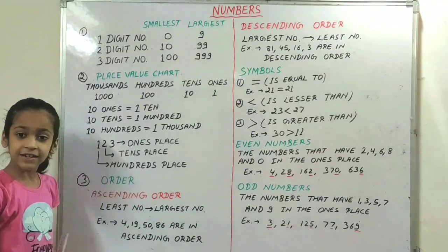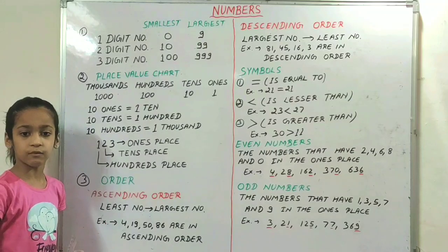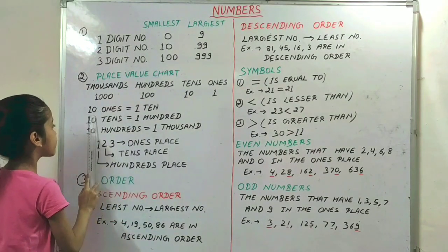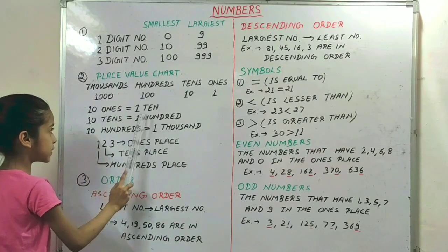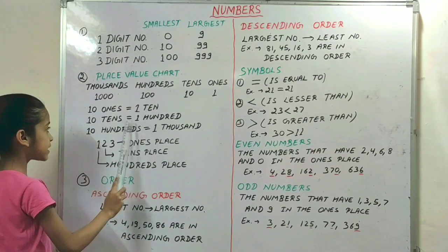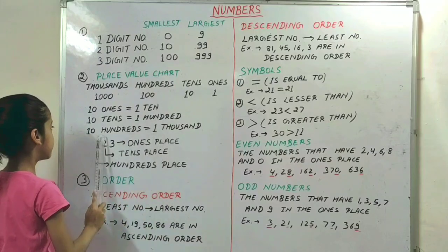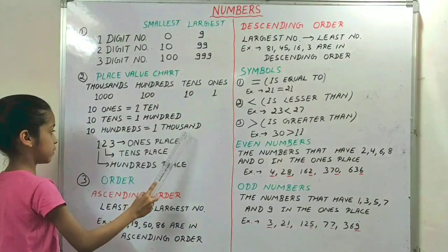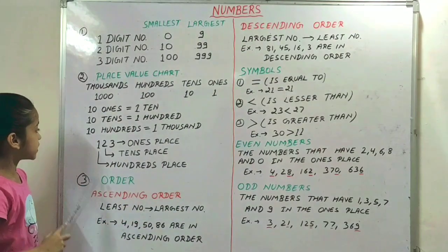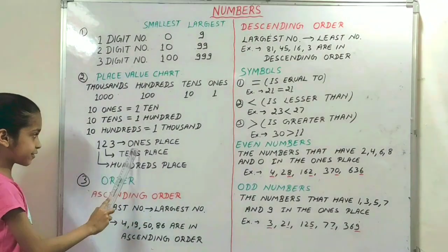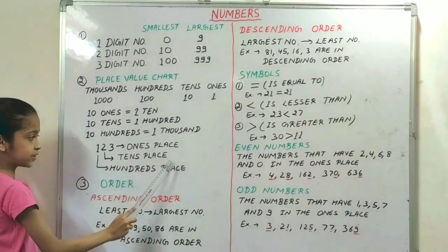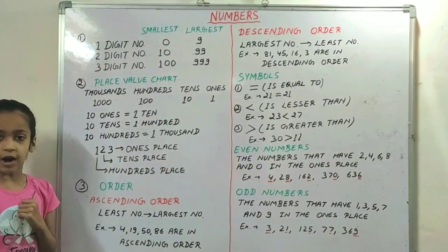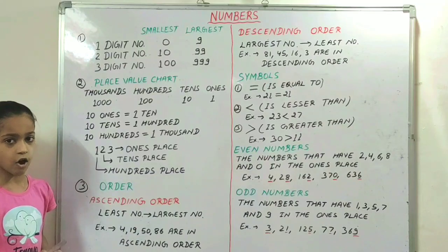In the place value chart you can learn how to convert numbers. 10 ones equals to 1 ten. 10 tens equal to 100. 10 hundreds is equal to 1000. So here you can see: 3 is on the ones place, 2 is on the tens place, and 1 is on the hundreds place. So our next basic is order.